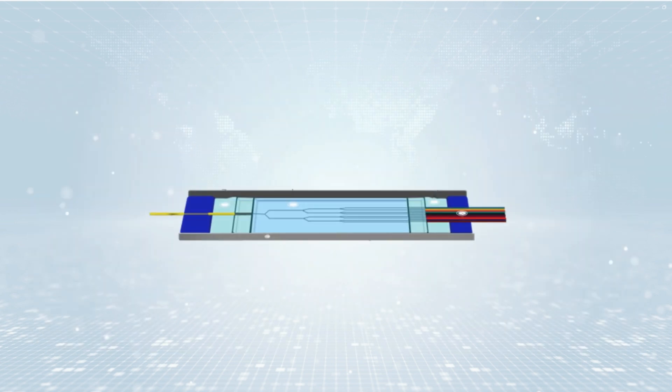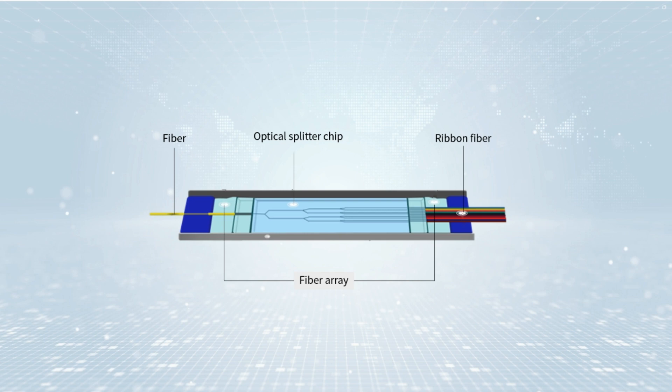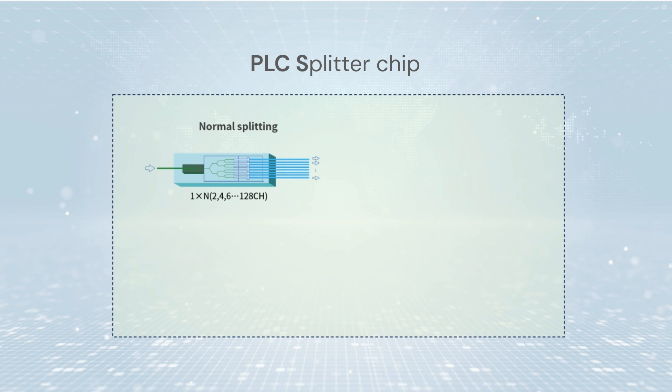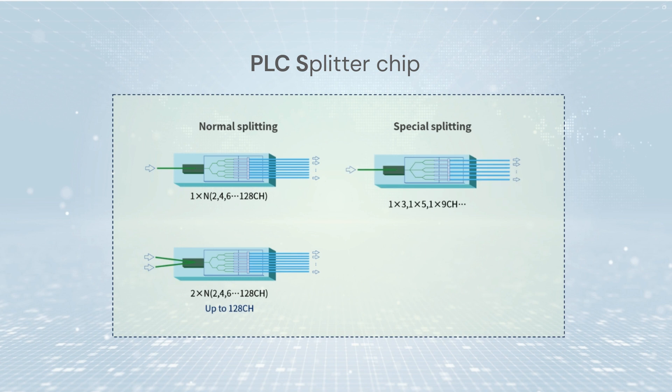The PLC Optical Splitter consists of three parts: an optical splitter chip and two fiber arrays coupled at both ends. The chip is manufactured using semiconductor technology to grow a layer of splitting waveguide on a quartz substrate. The chip has one input port and multiple output port waveguides. Input and output fiber arrays are coupled to both ends of the chip, and the package is sealed to form an optical splitter with one input and multiple output ports.